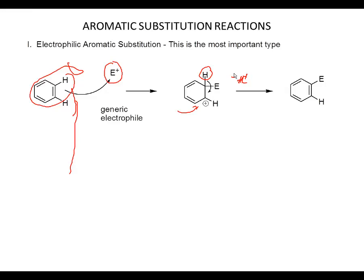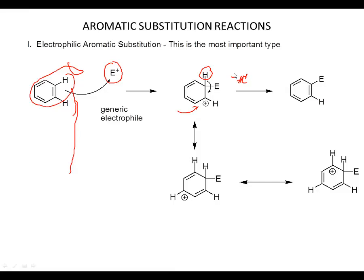This intermediate carbocation is kind of an interesting species. If you just looked at it, you'd probably say this is a pretty good carbocation, because it's stabilized by resonance — it's an allylic carbocation. We could write a resonance structure where the carbocation is now right here, and yet another where we delocalize it over here. The carbocation is totally delocalized over the ortho and para positions relative to where E is.